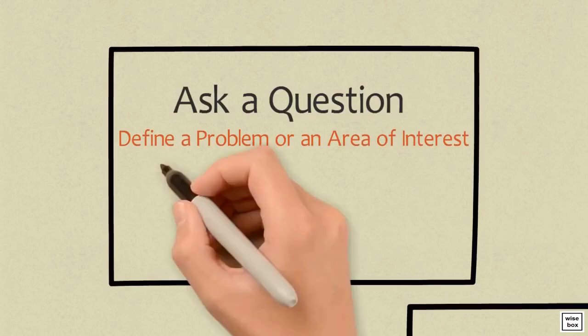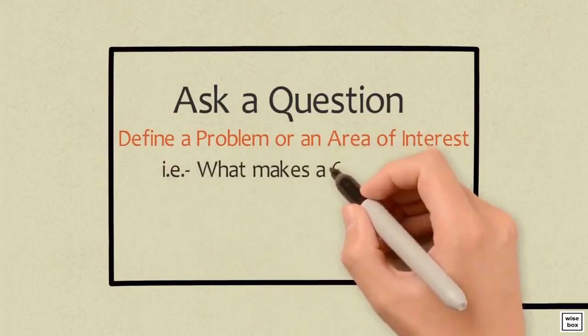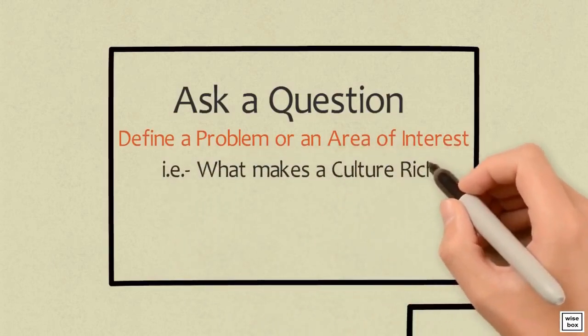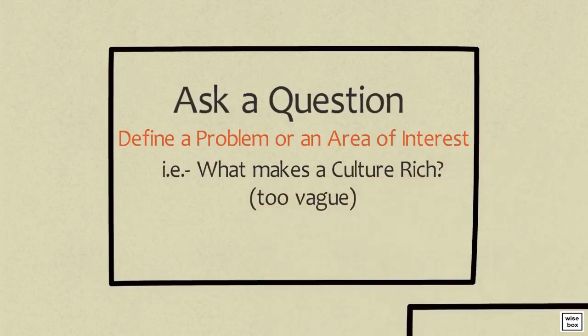Being very specific and narrow is important in this step. Asking a question such as, what makes a culture rich, is too vague because the word rich can be defined in a number of different ways. Do we mean rich as in monetary wealth, or do we mean rich as in living fulfilling lives?